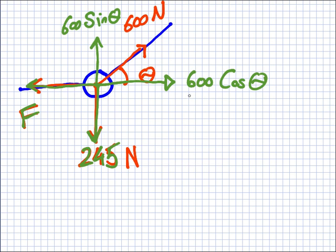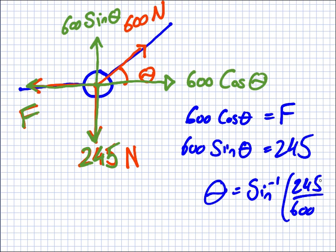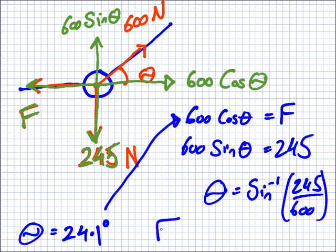Meaning, kind of like with the bird, this and this need to be the same so it doesn't move. They cancel. So you have 600 cos theta equals F. That's no good. But 600 sin theta equals 245. That is good because that gives us the theta. The theta is sin inverse 245 over 600. So what is the theta then? 24.1 degrees.